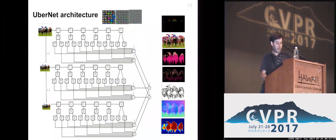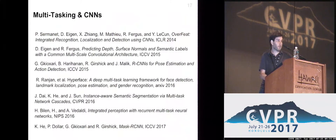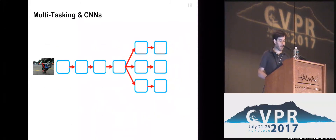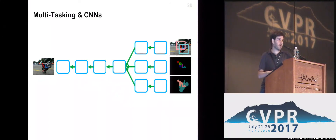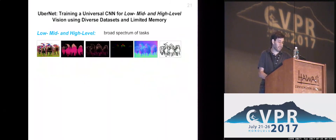Now, by itself that is not necessarily the new aspect here. Multi-task training has been used for quite a few years in the context of CNNs — you take the image, pass it through a network with a shared common trunk, and then have task-specific branches giving task-specific responses, comparing to ground truth and backpropagating. What is new here and what makes the problem challenging and interesting is the breadth of tasks we're trying to solve — going all the way from high-level tasks like object detection down to low-level tasks like boundary detection.